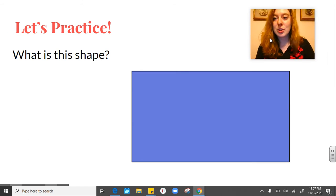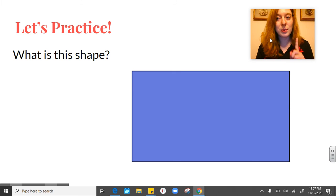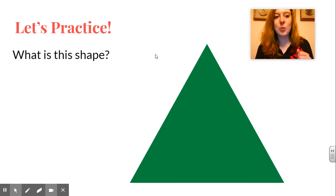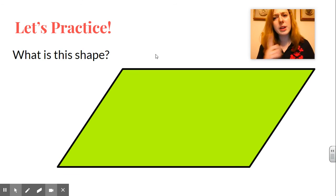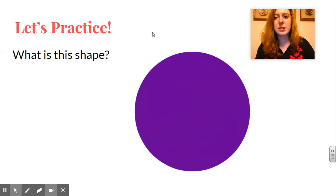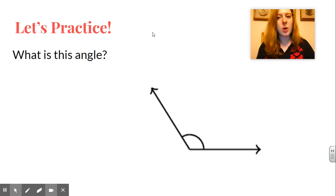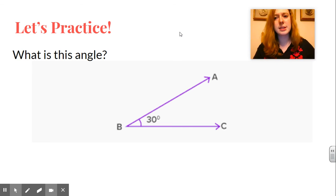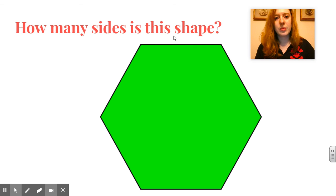Okay. So let's practice. So I want you to write the word in the Edpuzzle, and I'm not going to give you any choices. You have to think about it. So what is this shape? What is it called? What is this shape? What is it called? What is this shape? What is it called? What is this shape? What do we call it? Okay. What is this angle? Okay. What is this angle? What is it? What is this angle? Okay. How many sides is this shape? What do you think? How many sides? How many sides is this shape?